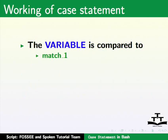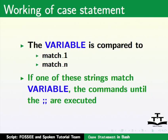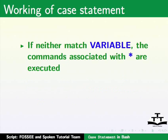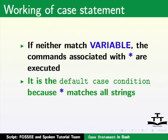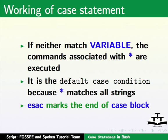The variable is compared to match one. If it does not match, it moves on to the next case. It will check if any one of the strings matches the variable. If yes, all the commands until the double semicolon are executed. If neither matches the variable, the commands associated with the asterisk are executed. It is the default case condition because the asterisk will match all strings. Esac marks the end of the case block.